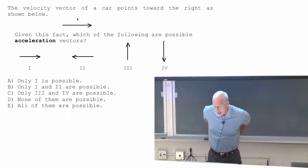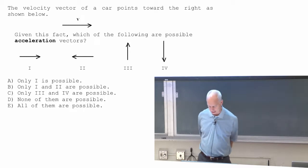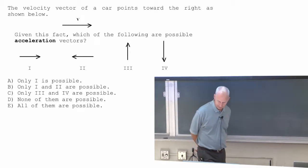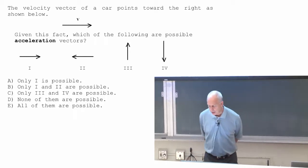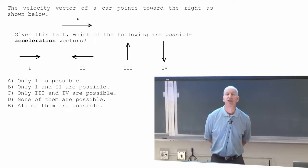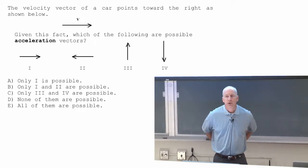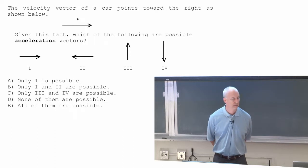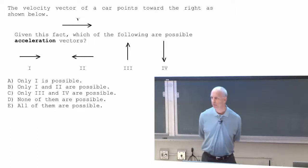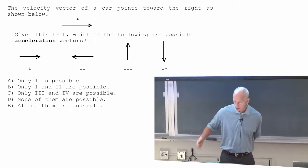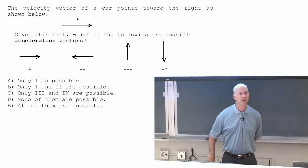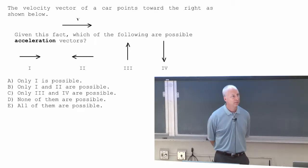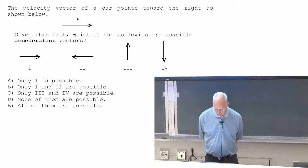So I've just got a few questions to give you a chance to think about some of these things. Suppose the velocity vector of a car points to the right. So the car is moving to the right. The magnitude of that is the number that's showing up right at this moment on the car's speedometer.